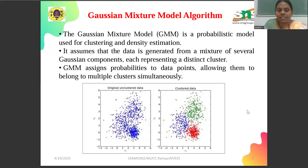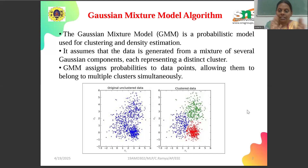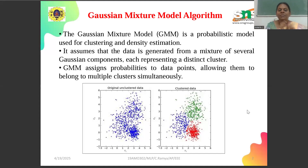The GMM, that is the Gaussian mixture model algorithm, is a probabilistic model used for clusters as well as based on density estimations. From the image you can see the original unclustered data with blue data points, and in the clustered data we can see clusters with different colors. The data is generated from clusters of several Gaussian components representing distinct cluster values. This algorithm works based on probabilities of data points, allowing them into multiple clusters.